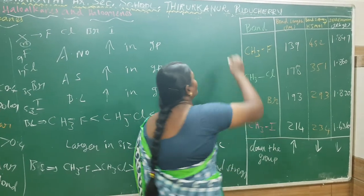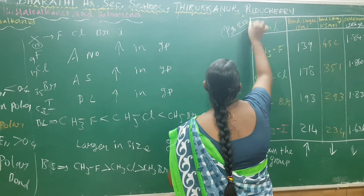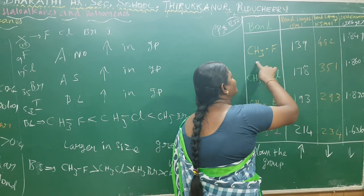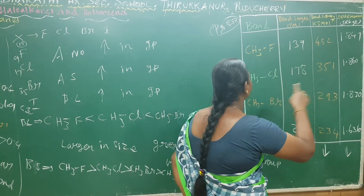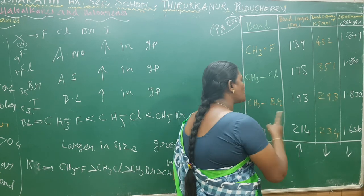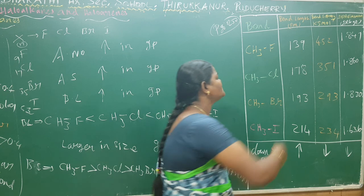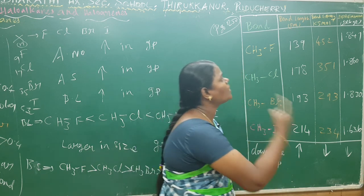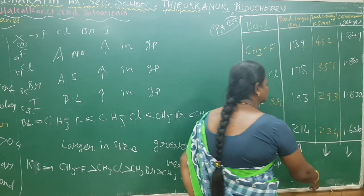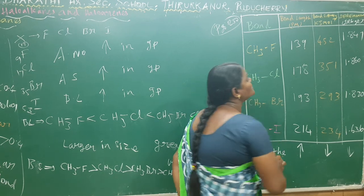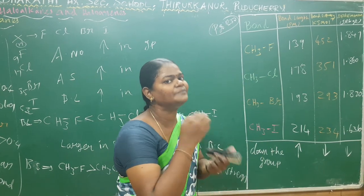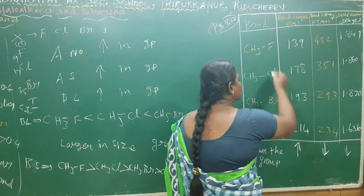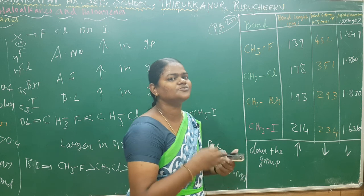In your textbook page number 230, the bond length values are: C–F = 138 pm, C–Cl = 178 pm, C–Br = 193 pm, and C–I = 214 pm. Bond length increases down the group, but bond enthalpy decreases because atomic size increases down the group, making the bond weaker.